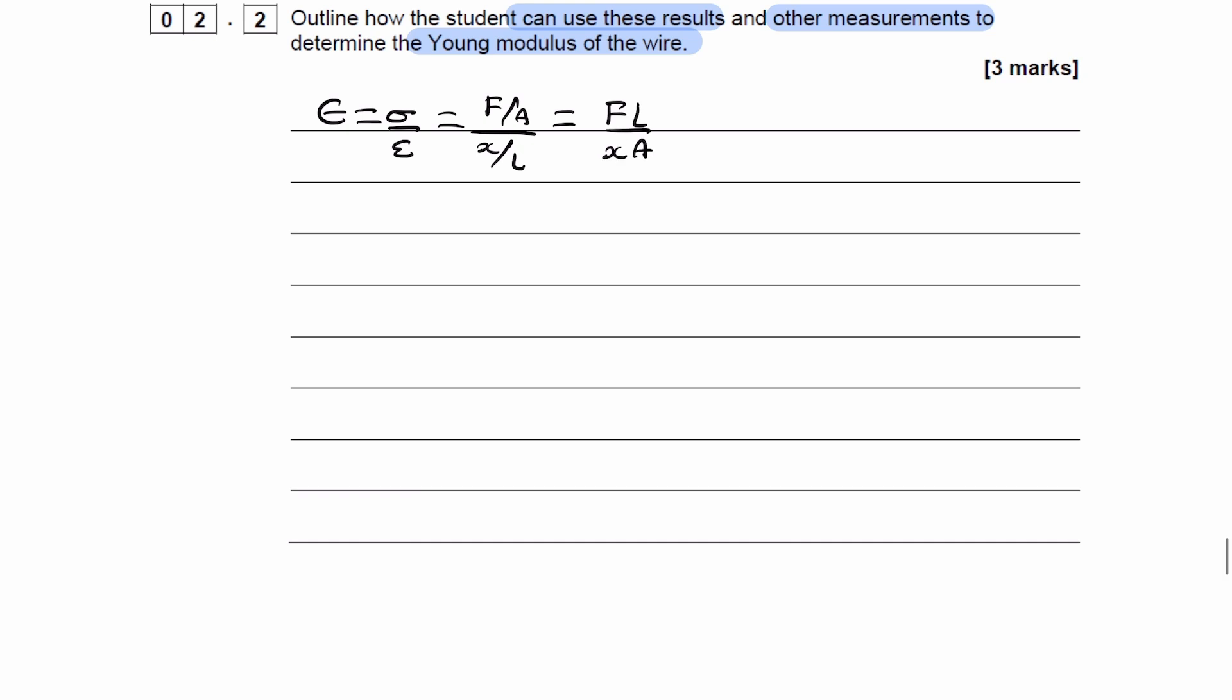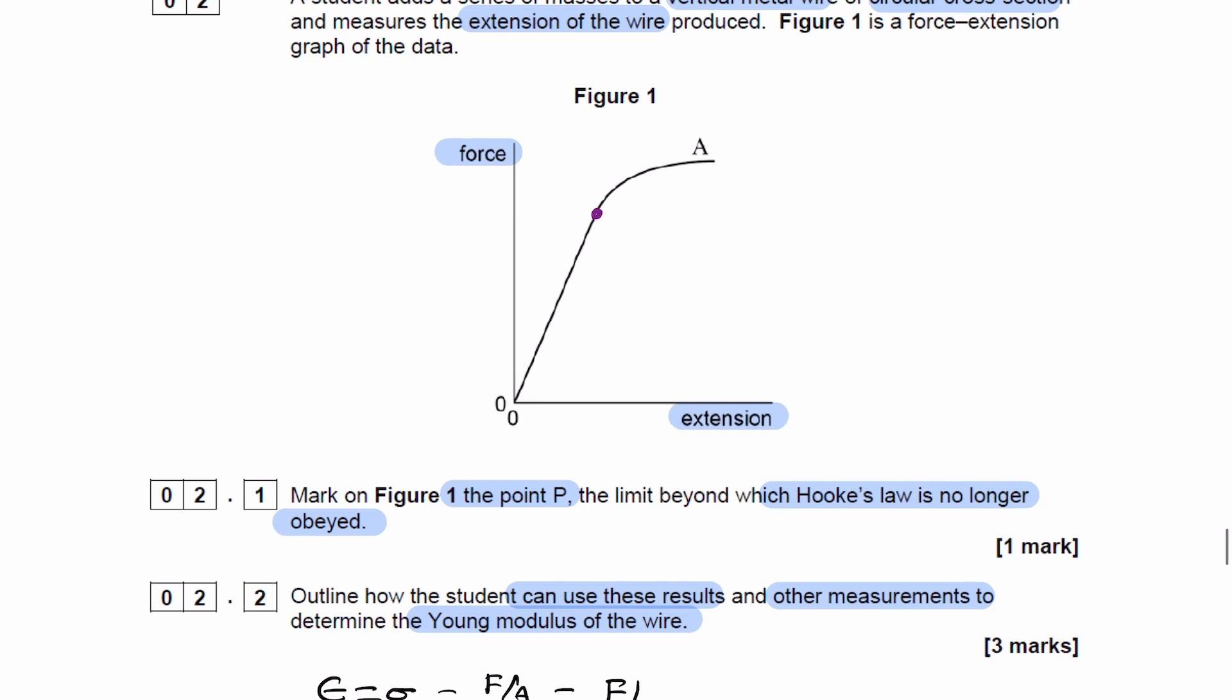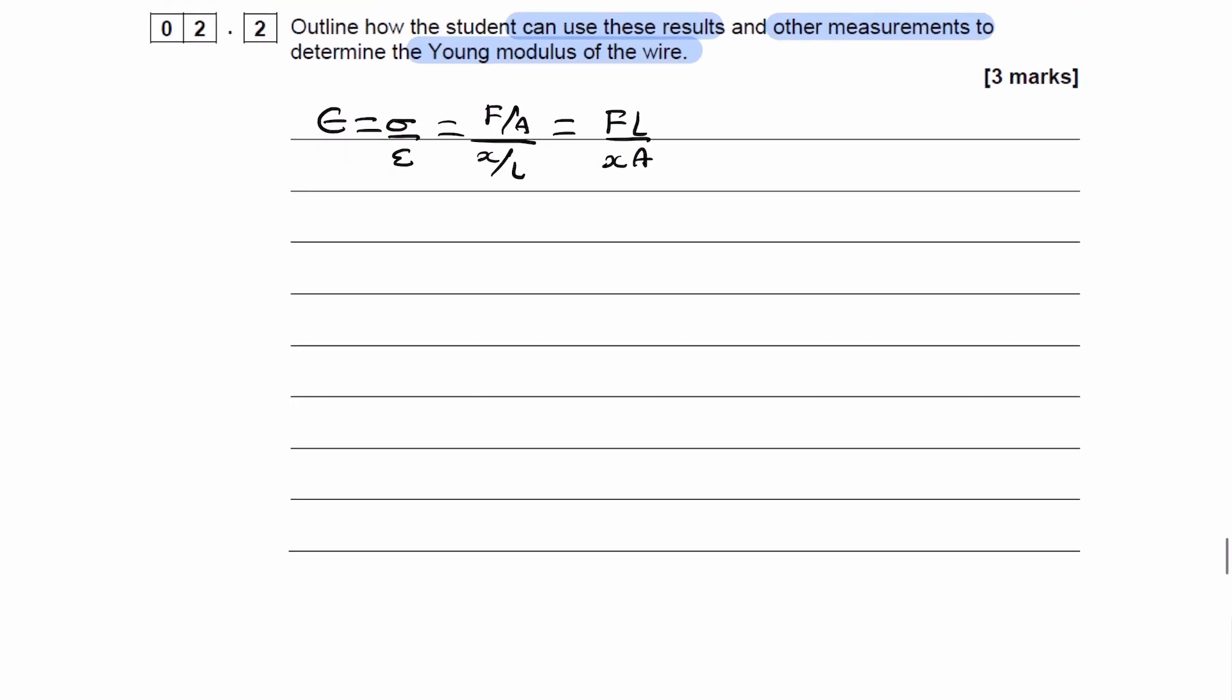So we already have in the question a graph of force against extension. If we work out the gradient of the linear portion of that graph, we get F over X.